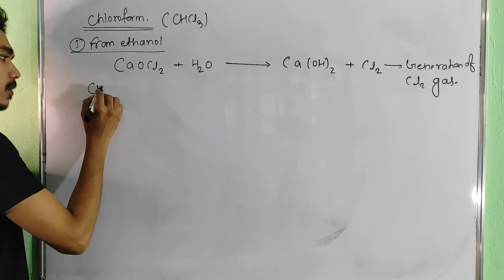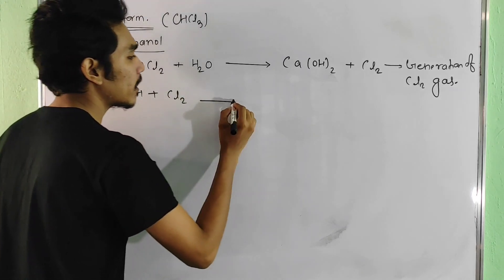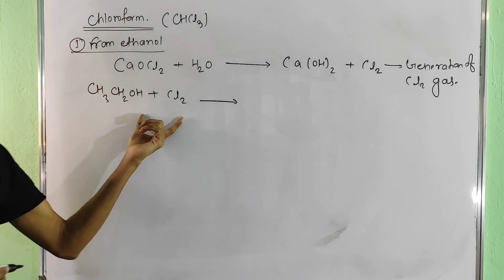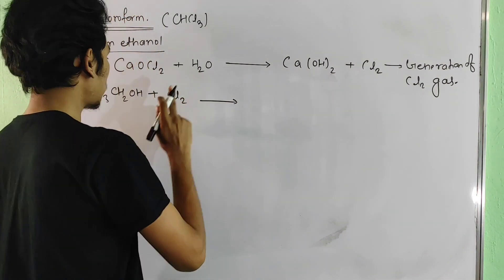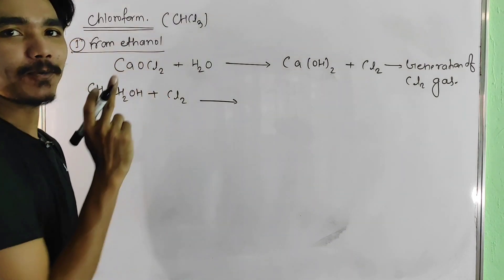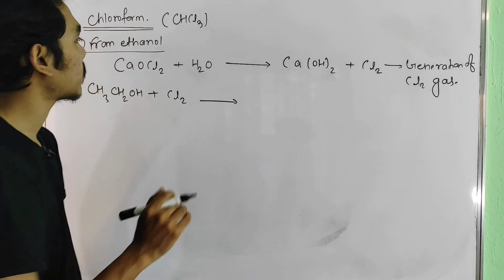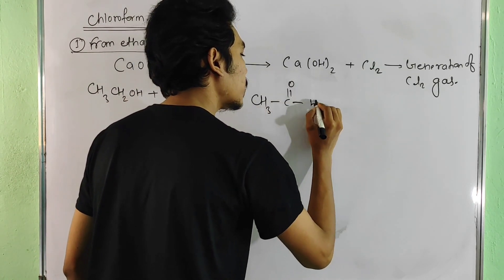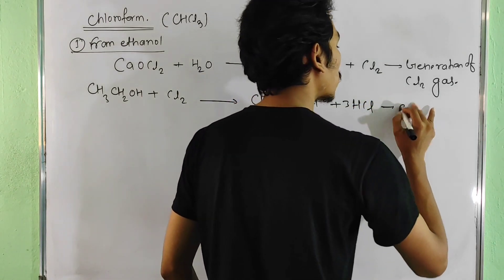In the next step, we take CH3CH2OH — ethanol. We first put it in chlorine. This step involves chlorination and oxidation. The product at this stage is an aldehyde with a carbonyl bond (C=O). Then 3HCl is released. This step is called chlorination.